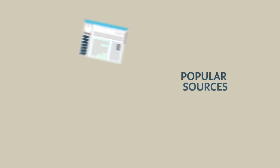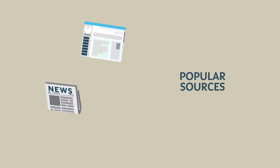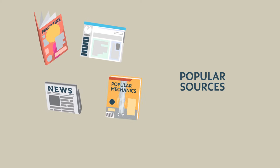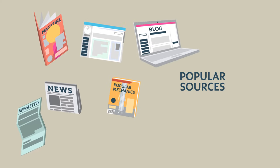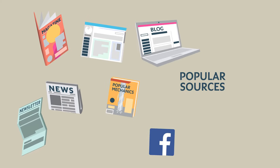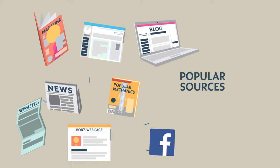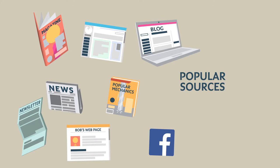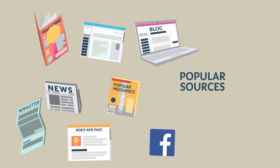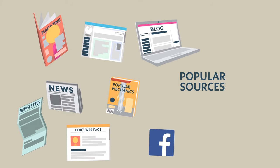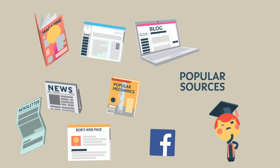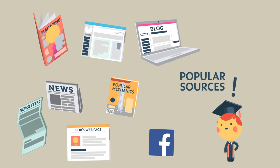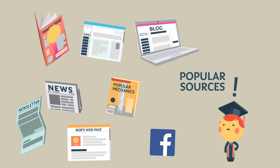Sources such as Wikipedia, newspaper articles, magazines, trade journals, newsletters, blogs, social media sites and personal websites, on the other hand, are not. They can be useful for background reading around a topic, but they're not scholarly resources.